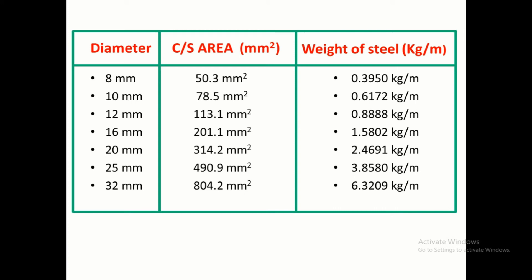Similarly we could find till 32 mm, and the weight of the steel we have calculated by our standard formula D² by 162. We do not need weighing scale every time. We do not need weighing scale for measuring the weight of the steel bar which is required in the construction.